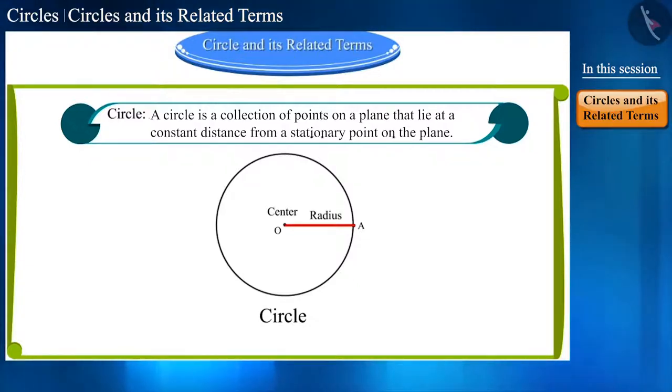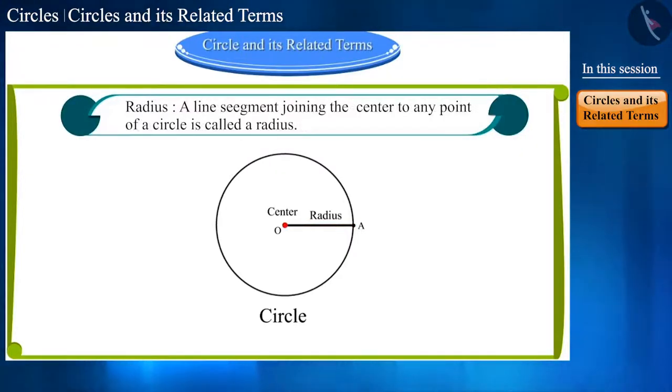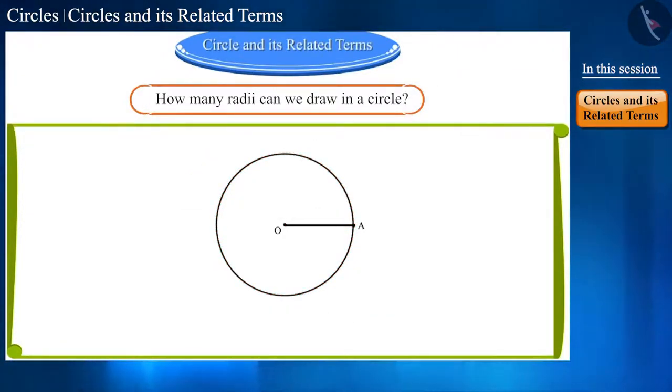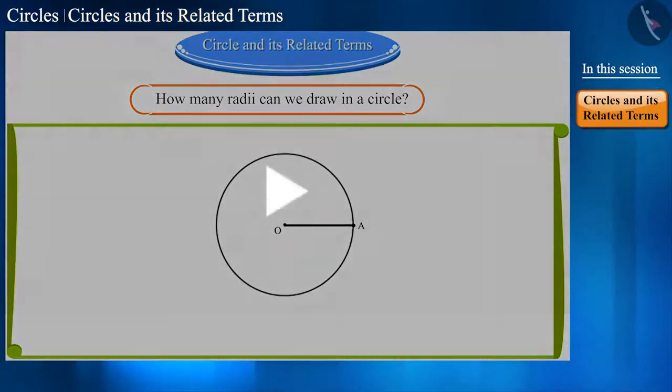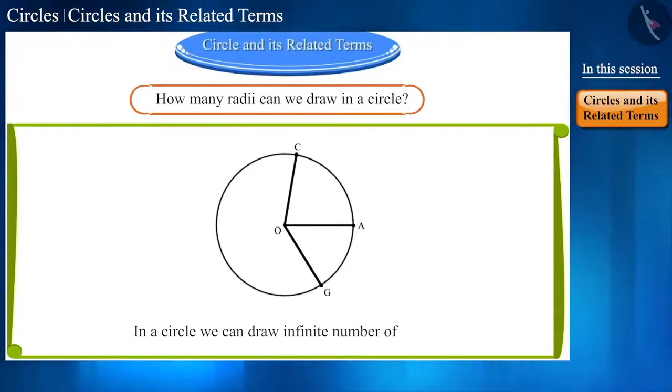We also define it as the line segment joining the center to any point of the circle is called the radius. Radius is used in two ways: first as a line segment, such as the line segment OA here, and second as the length of the line segment OA. There are countless points on the circle, so can you tell how many radii we can draw in a circle? You can pause the video and think of the answer. Yes friends, in a circle we can draw infinite number of radii, but all will have the same length.